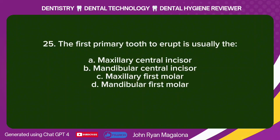Question 25: The first primary tooth to erupt is usually the: A. Maxillary central incisor. B. Mandibular central incisor. C. Maxillary first molar. D. Mandibular first molar. Answer: B. Mandibular central incisor.